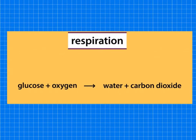Detritivores and decomposers are all living things, and if they're living things, respiration is going to occur. They will be taking in the decaying matter as glucose and also taking in oxygen from the air, and they'll be converting that into water and carbon dioxide to release energy to allow them to live. The carbon dioxide is really important and that's related to the carbon cycle, which we'll talk about in my next video.